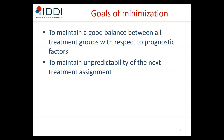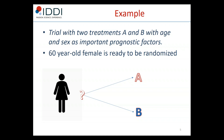The goal of minimization is to maintain a good balance between all treatment groups with respect to prognostic factors, and also to maintain unpredictability of the next treatment assignment. To illustrate how it works, suppose we have a trial with two treatments, A and B, and age and sex are important prognostic factors.